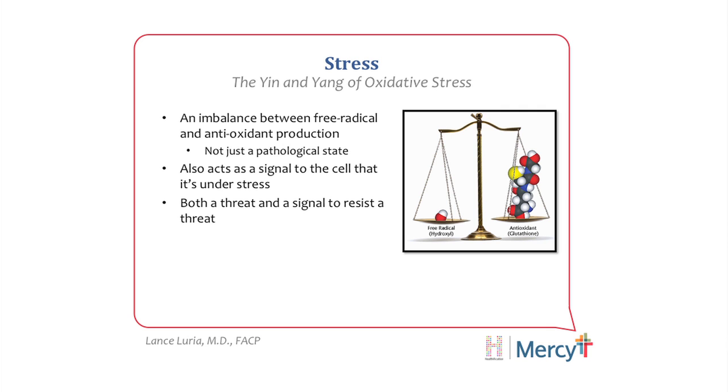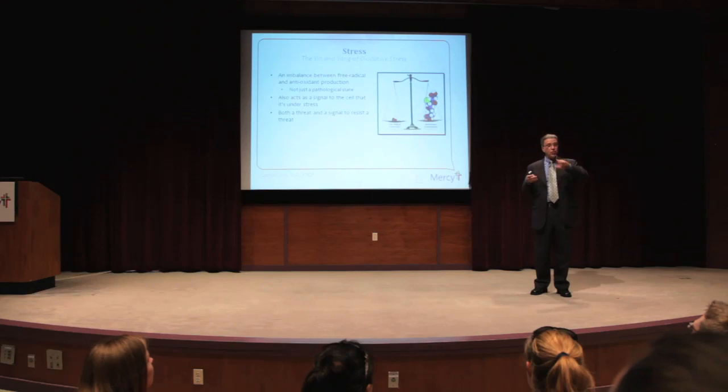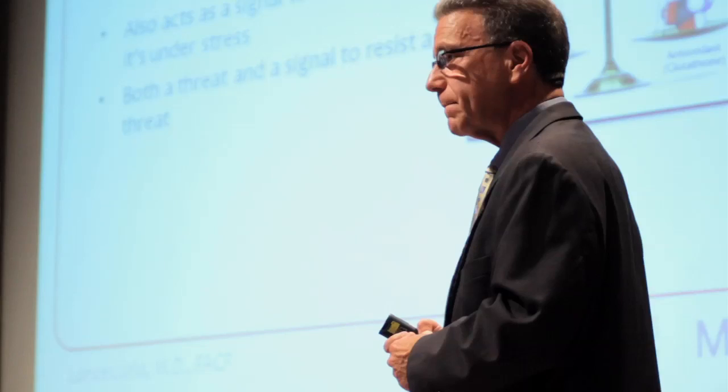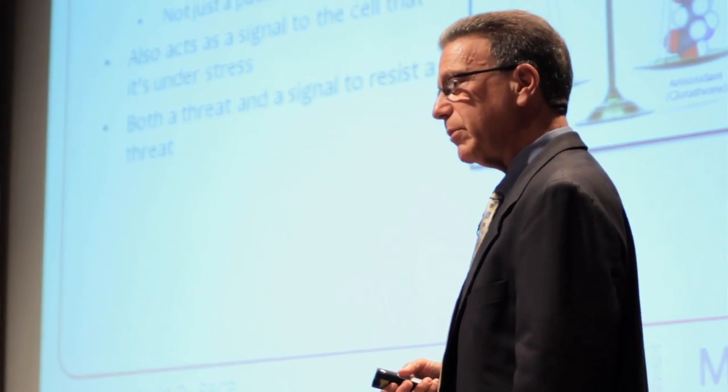It's not just a pathological state. It also acts as a signal to the cell that it's under stress. So why not just take lots of antioxidants and get rid of it? Why not just chug all kinds of antioxidants? That's what people would recommend. But what's the advantage of irritating or causing some damage? The cell, like us, has to get motivated to become better. If it's not motivated, why would it become better?